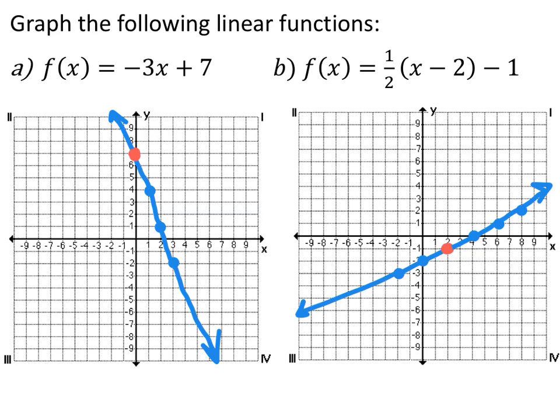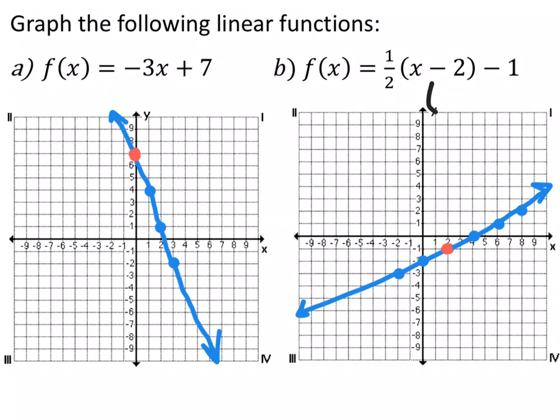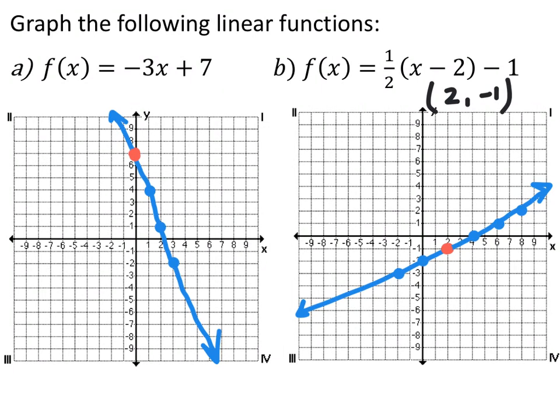This one is in point-slope form, so you have a point of 2, negative 1, so I plotted that here in red. And then you have a slope of 1 half, so up 1 over 2. And so that's this line, and it's increasing because your slope is positive.